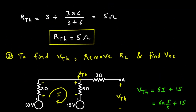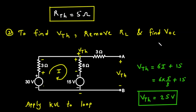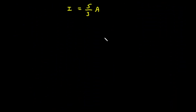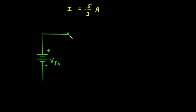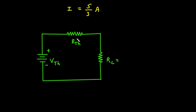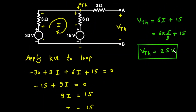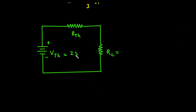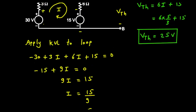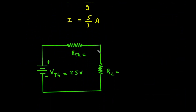Now we found the values of VTH and RTH, so we can draw the Thevenin's equivalent circuit. In the Thevenin's equivalent circuit, VTH is a voltage source with positive and negative terminals, RTH is in series with it, and RL is the load resistor connected across terminals A and B. VTH is equal to 25 volt and RTH is equal to 5 ohm.